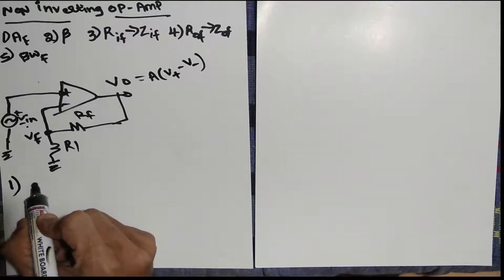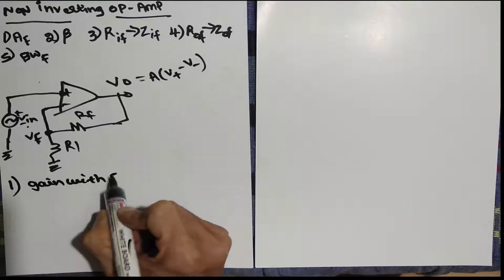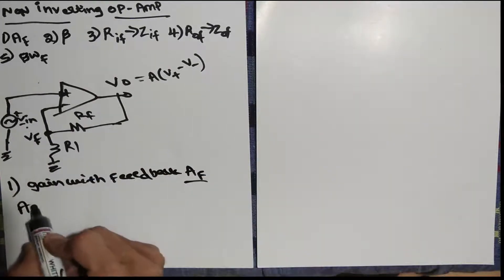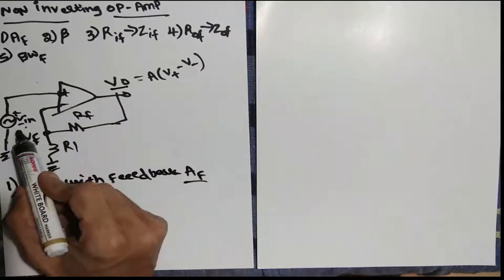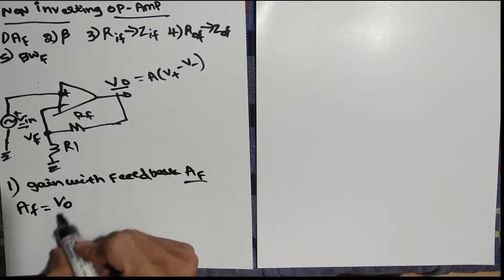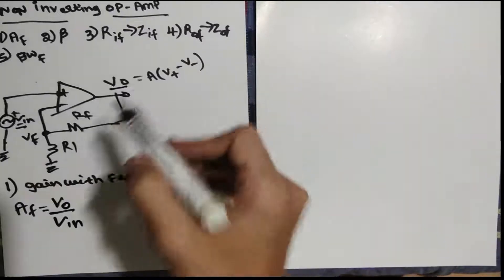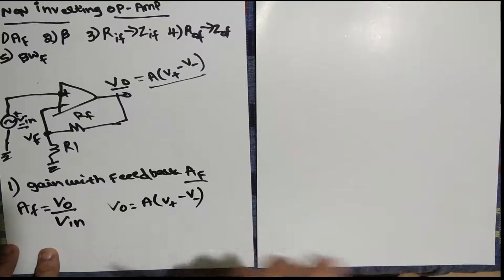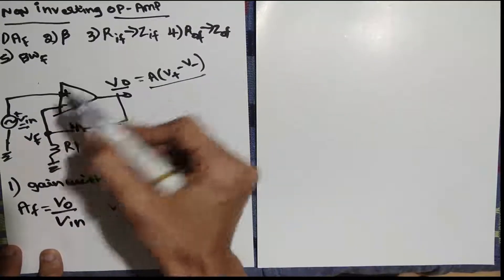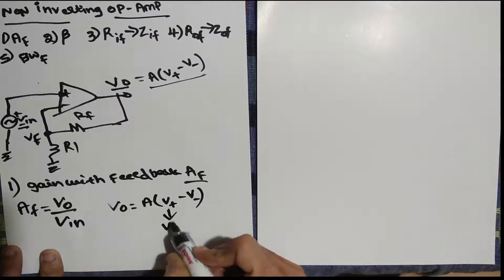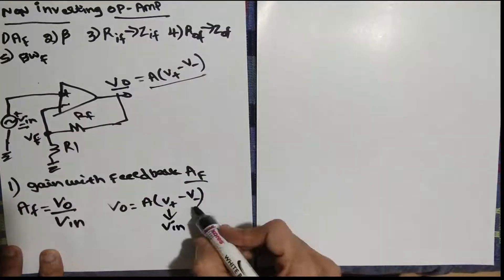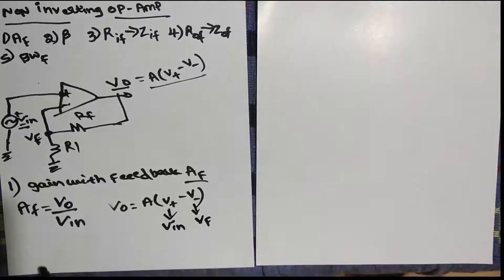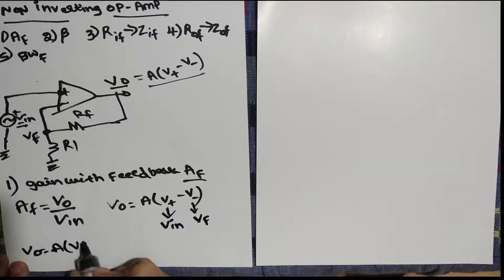First we will find out the gain with feedback, which we are calling AF. AF is nothing but V0 divided by VIN, because for the whole circuit the output is V0 and the input is VIN. So AF equals V0 divided by VIN. From our formula, V0 equals A into (V-plus minus V-minus). V-plus is connected to the positive terminal, which is VIN, so V-plus equals VIN. V-minus is connected to VF, so V-minus equals VF. Simplifying, V0 equals A into (VIN minus VF).